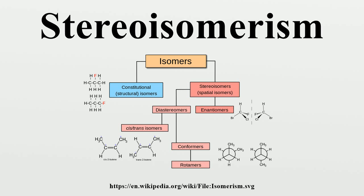Diastereomers are stereoisomers not related through a reflection operation — they are not mirror images of each other. These include meso-compounds, cis and trans isomers, and non-enantiomeric optical isomers. Diastereomers seldom have the same physical properties. In the example shown below, the meso-form of tartaric acid forms a diastereomeric pair with both levo and dextro tartaric acids, which themselves form an enantiomeric pair.